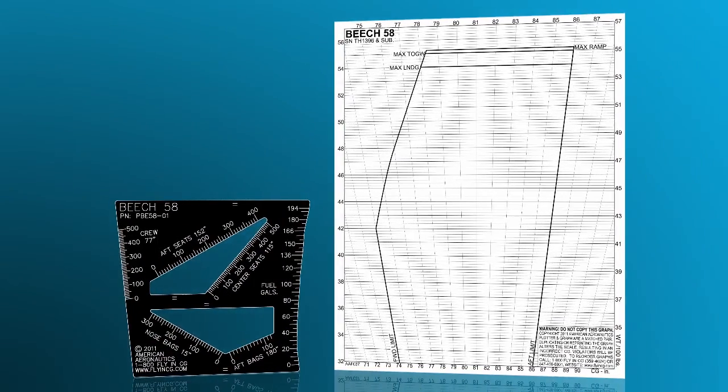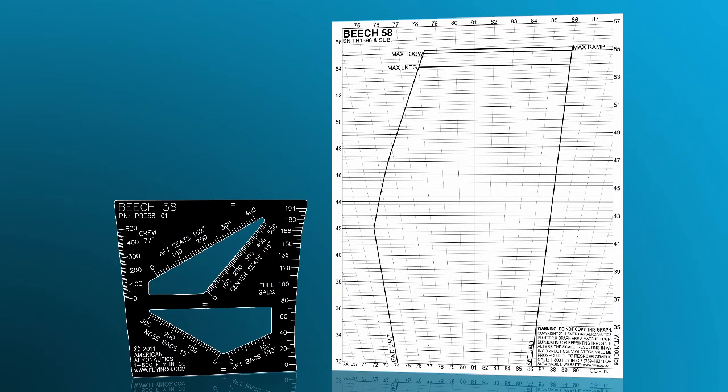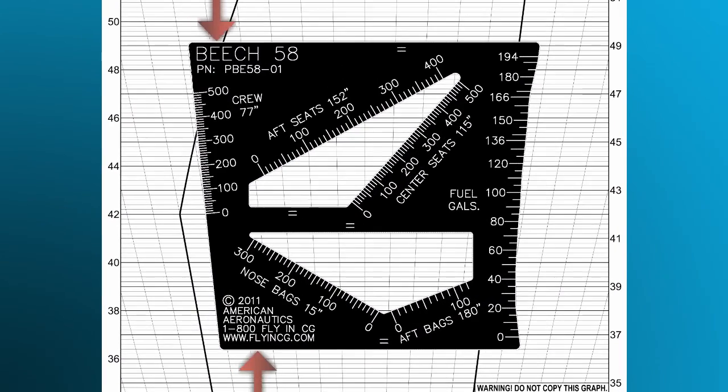The most important thing to know when using the vector method is to ensure that the aluminum plotter is lined up properly with the graph. To do this, make sure that the top or bottom edge of the aluminum plotter is aligned with the horizontal weight lines on the graph. It is incorrect to align the aluminum plotter with any of the center of gravity lines on the graph.